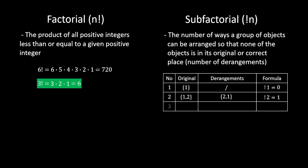The most interesting one for us is three objects. How many derangements are there for three objects? The answer is two: we can arrange them as [2, 3, 1] or [3, 1, 2]. Just a quick reminder — you cannot use [3, 2, 1] because 2 would be in its original position. So sub-factorial of 3 = 2, and this is the value we are most interested in for this challenge.